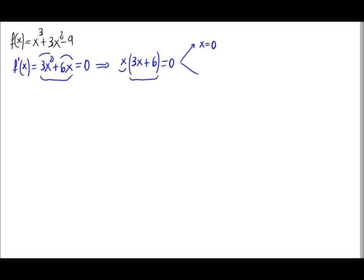Here we have a product equal to 0, so either x = 0, or 3x + 6 = 0. The second equation gives 3x = -6, so x = -6/3 = -2. So x = 0 and x = -2 are the values that make the derivative equal to 0.